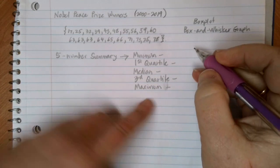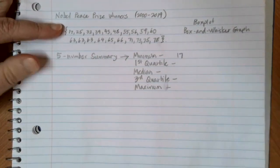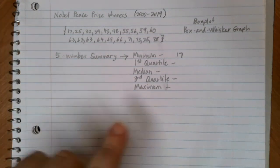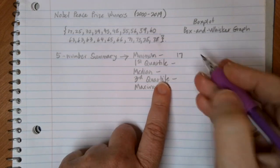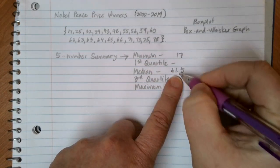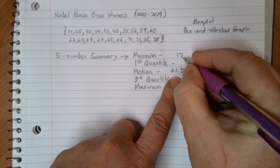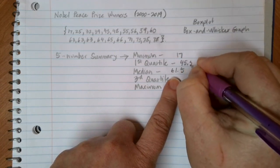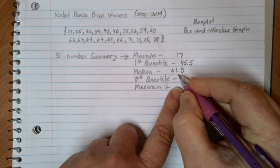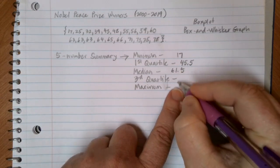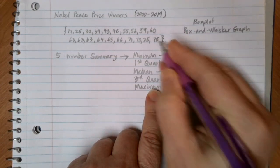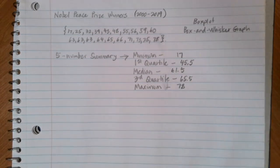When we calculated these earlier, the minimum value was 17, the smallest value in the list. The quartile, the median is that middle number in our list, which in this case was 61.5 years old. The first quartile was basically the median of our lower set of data here, which is 45.5. And our third quartile is the median of the upper half of the data, which we found to be 65.5. And then the maximum in this case was 78, the biggest data point in our set.